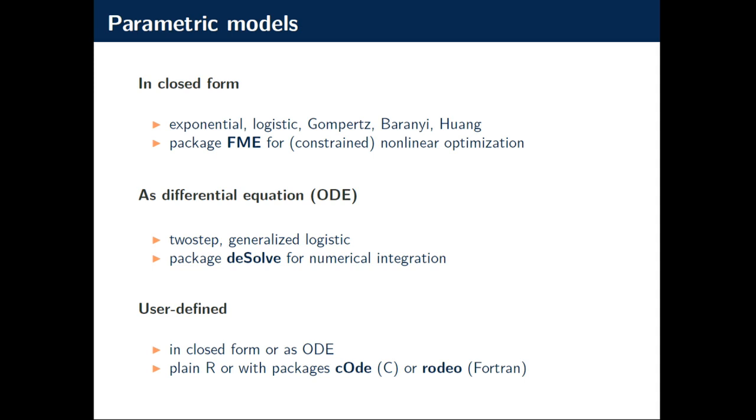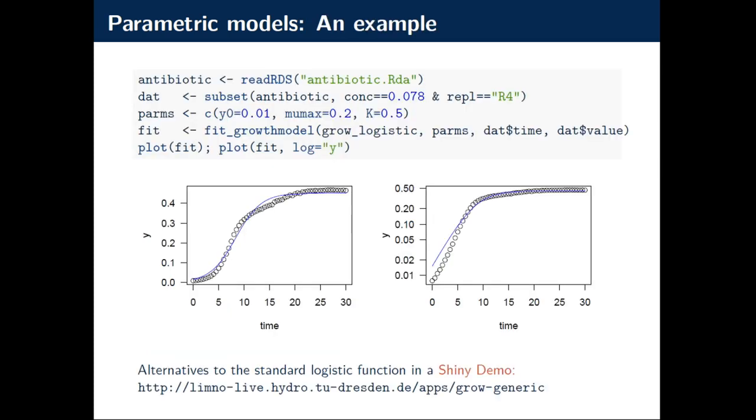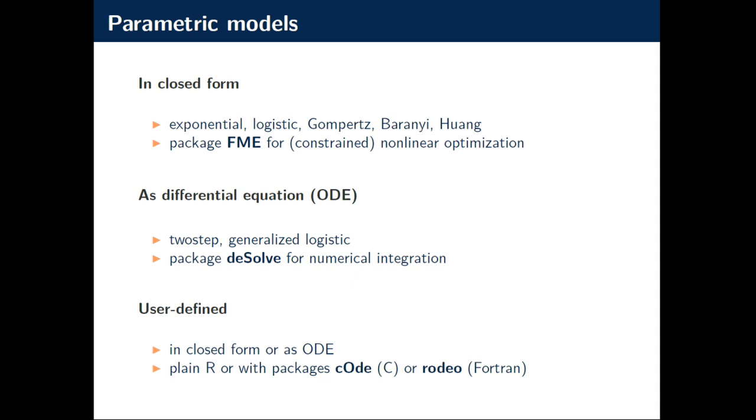So parametric models, as said, can be given in closed form or as a differential equation or user-defined. There are a few already in. Exponential, logistic, and several others with lag phase. The package FME is used for constrained nonlinear optimization. That's quite basic least squares. And differential equations can be given to our built-in, a two-step growth model with two equations and the generalized logistic. And it's possible to use compiled code thanks to the package C-O-D-E of Daniel Kashek.